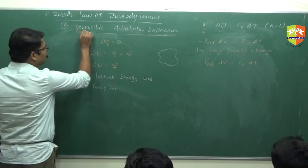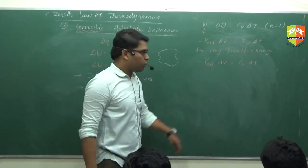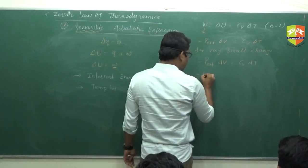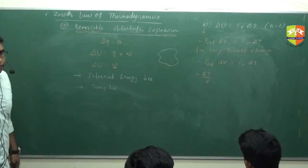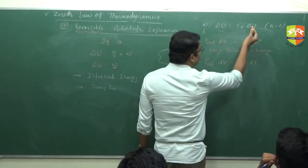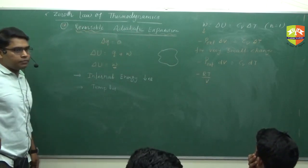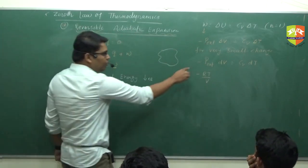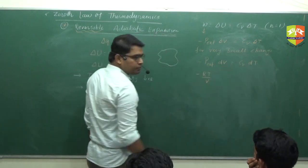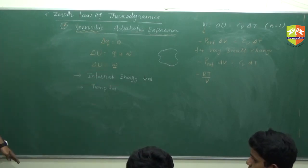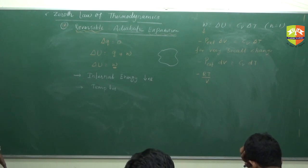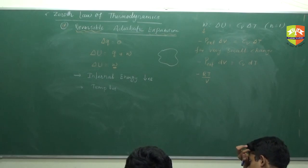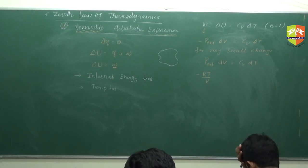The process is reversible, so P_external is not constant — we write it as RT/V for one mole. You can take any value of n, but we derive for n=1. The integral expression becomes: minus R·dV/V equals C_V·dT/T. Also note: Q is not equal to C_V delta T — that formula is for delta U. Delta H equals nC_P delta T.